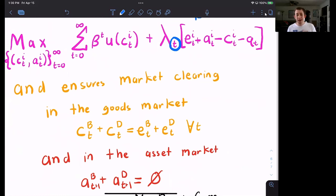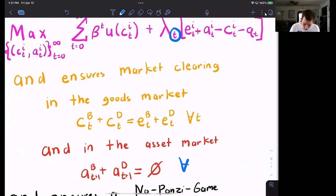And if I'm a lender, I have to be able to find a borrower. So I can't lend coconuts that don't exist. And I can't borrow coconuts that don't exist. So the sum of assets in this economy in every period need to be zero. So this is also for all t.